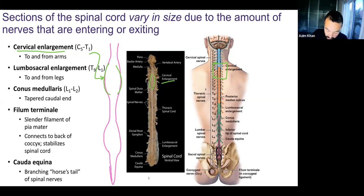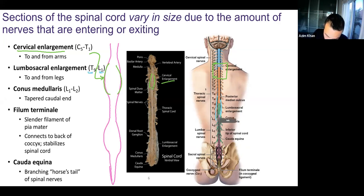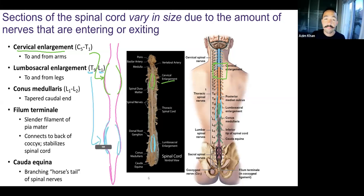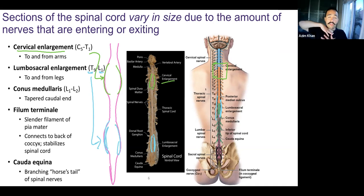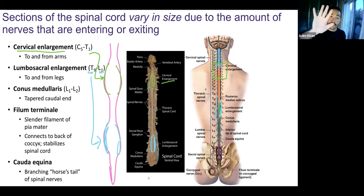It gets bigger again around T9 to L1 toward the tail end. This is the lumbosacral enlargement — it's in the lumbar sacral area, more caudal. Similarly, just like we needed lots of neurons for the arms, we need lots of neurons going to and from the legs. We don't need as many neurons in our thoracic/abdominal/pelvic region, but our arms and legs have many tiny muscles, many receptors in the hand, so you need a lot of neurons.